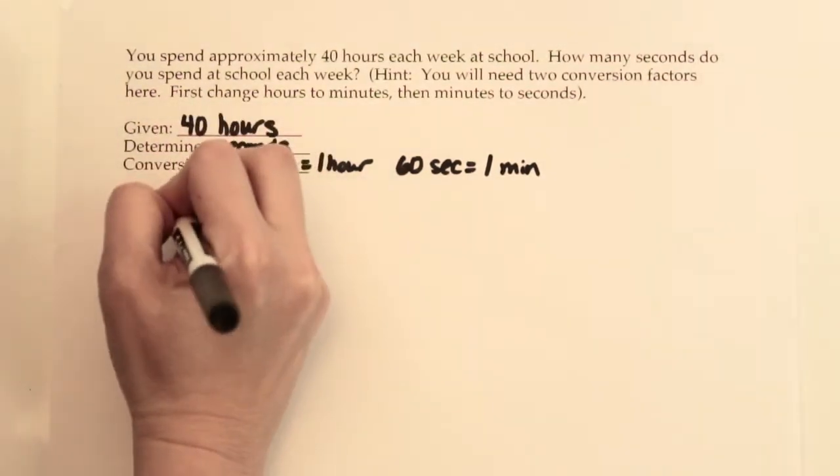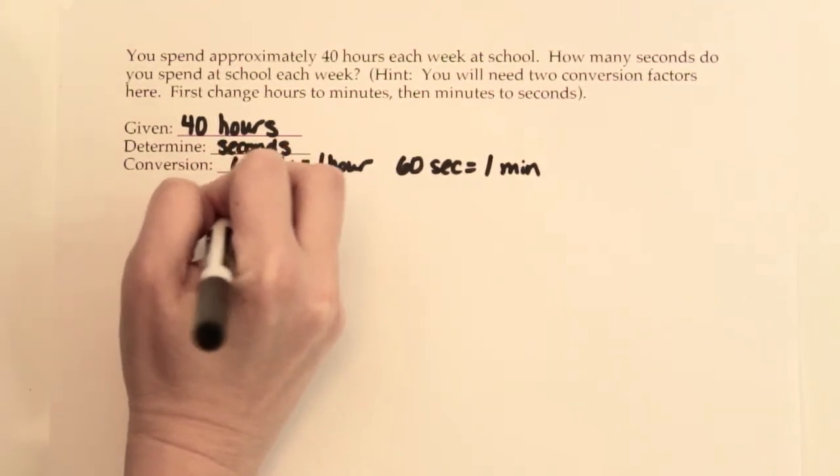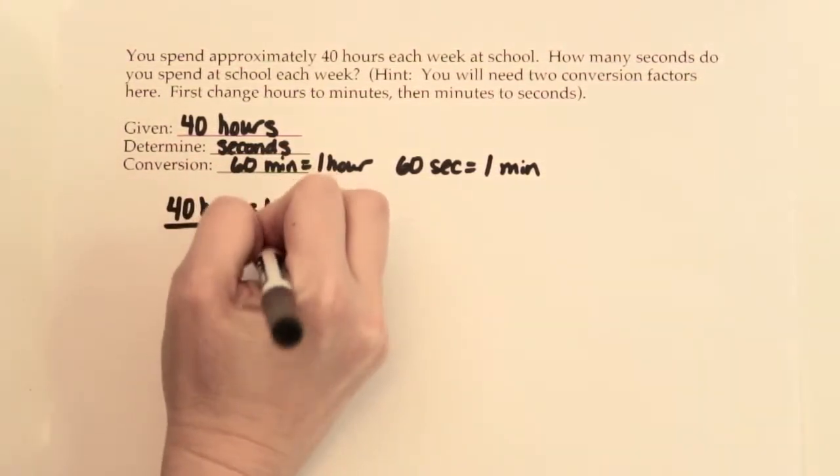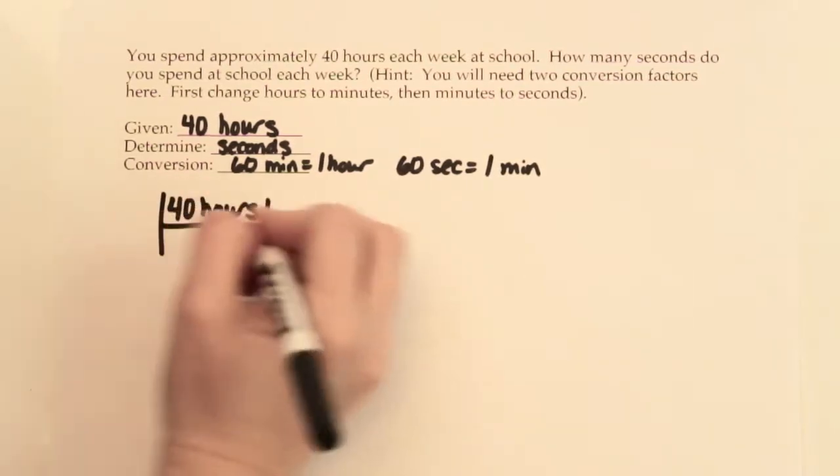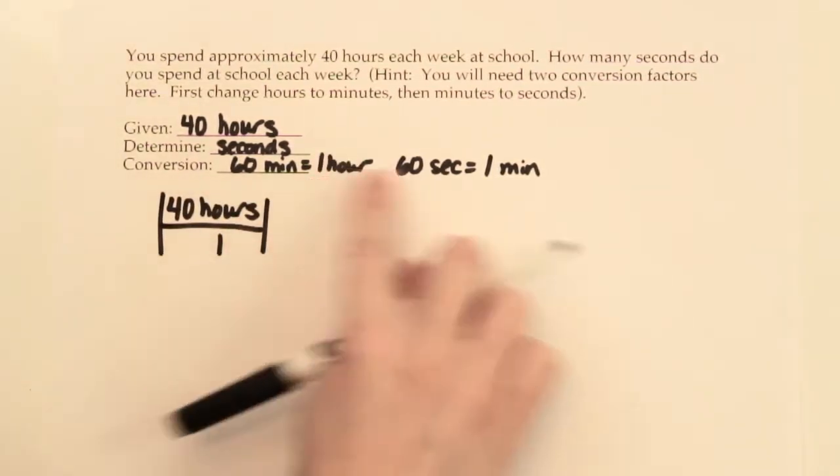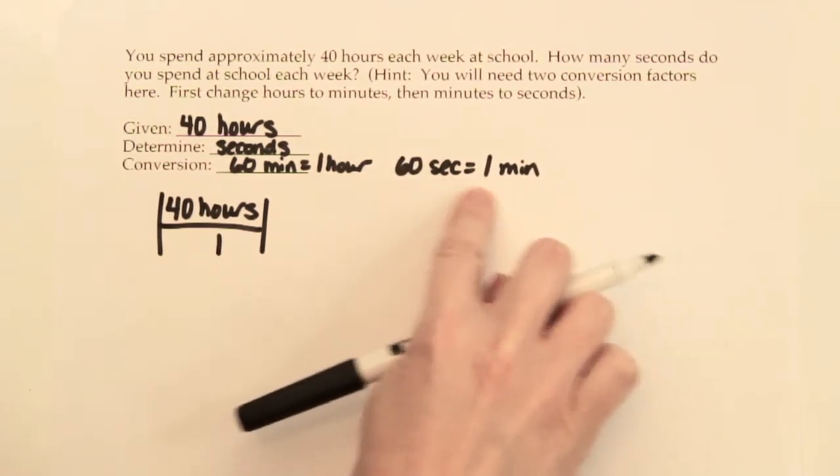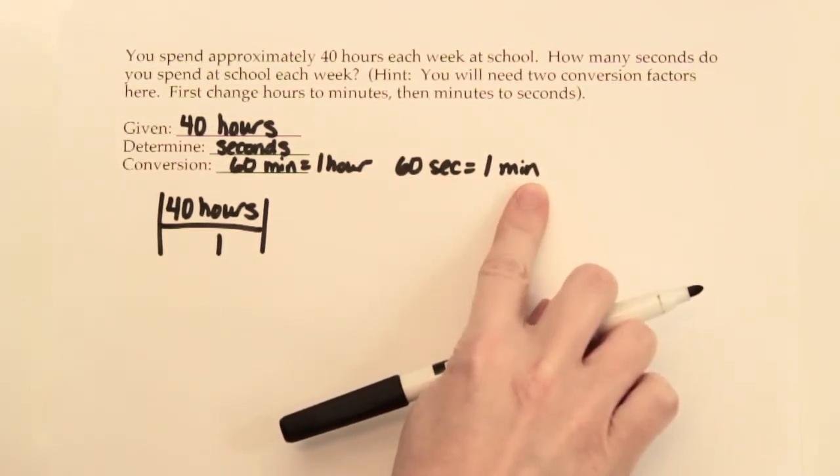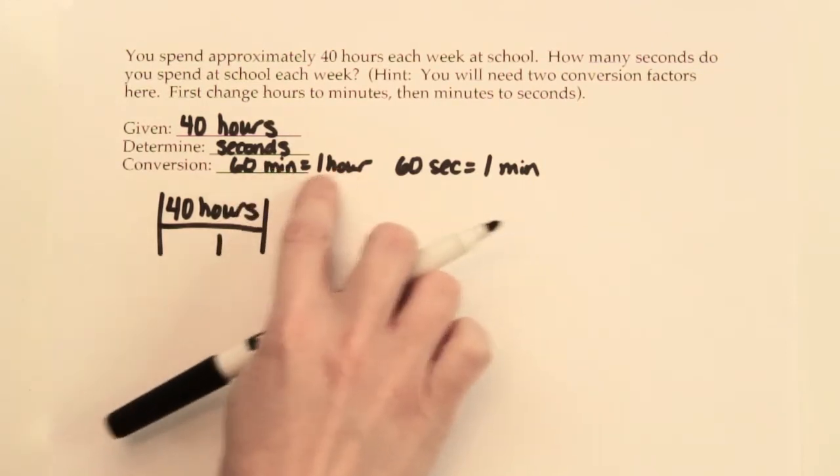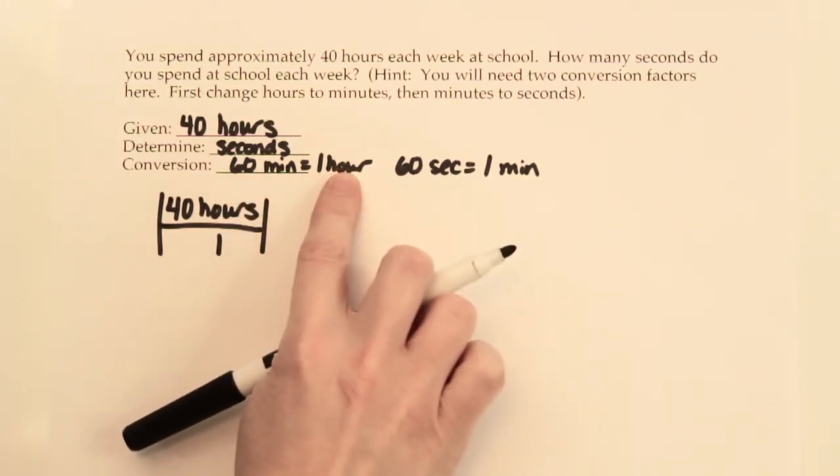always, always start with your given over the number one. So, 40 hours over the number one. This problem, we have two conversion factors. We have to decide which one's going to be helpful to us. The 60 seconds in a minute, we're not going to use it just yet. We want to get rid of our hours, so we'll use this conversion factor, 60 minutes in an hour.